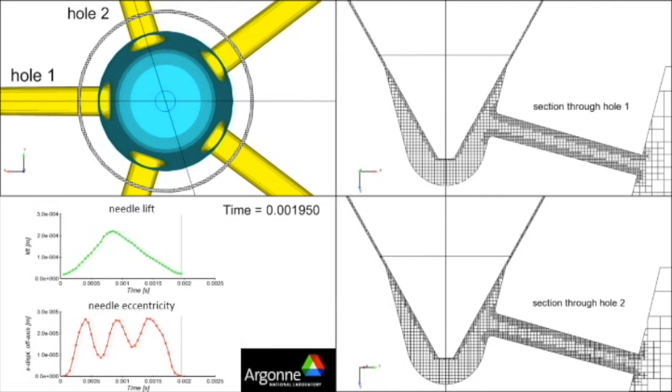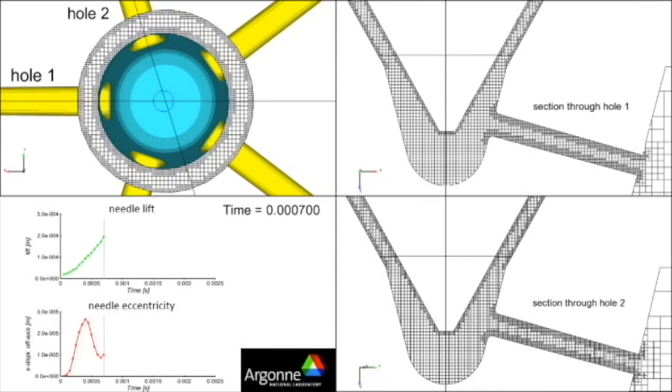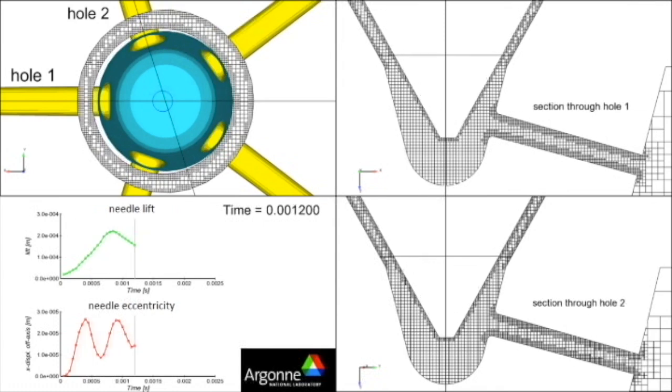Based on the direction of needle wobble, we expect that the fuel flow through hole one would be more constrained than the fuel flow through hole two.